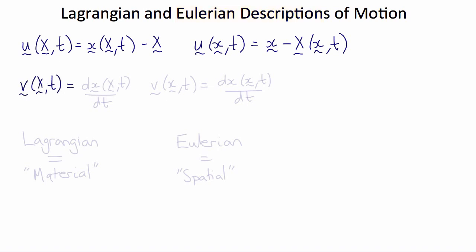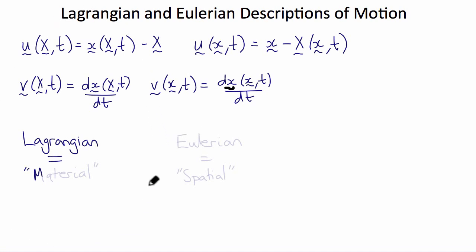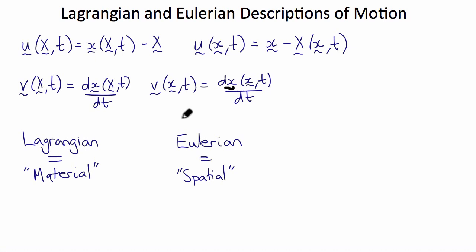Similarly, we can write Lagrangian or Eulerian definitions of velocity. From the point of view of the moving particle, velocity is v(X, t) = d[x(X, t)]/dt. From the point of view of a fixed external observer, velocity is v(x, t) = d[x(x, t)]/dt. When we write a description as a function of original coordinates labeling material particles, this is a Lagrangian or material description. When written as a function of spatial coordinates through which different particles pass at different times, this is the spatial or Eulerian view.